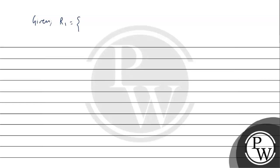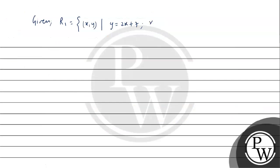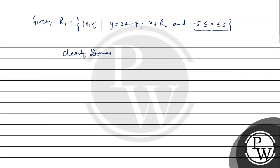What is given? r1 is equal to (x, y) such that y is equal to 2x plus 7, where x belongs to real numbers and x varies from minus 5 to 5. Clearly, x is varying from minus 5 to 5, so the domain of r1 will be x belonging to the closed bracket [-5, 5], because both have equal-to signs. So domain will be this.